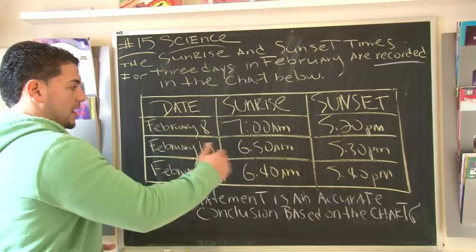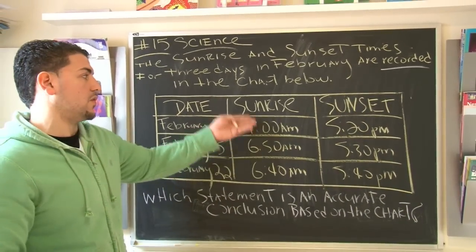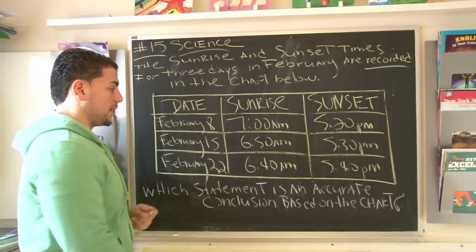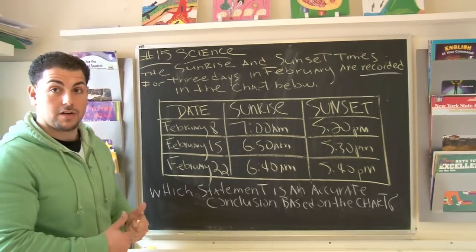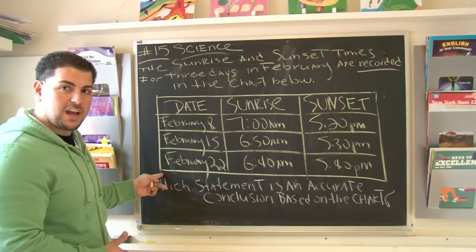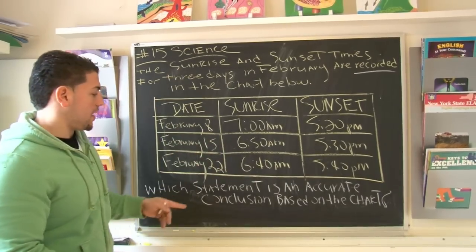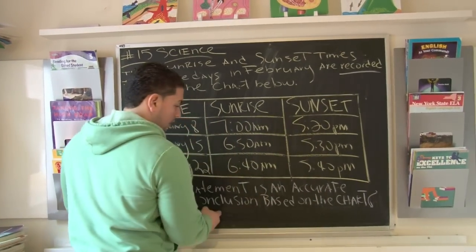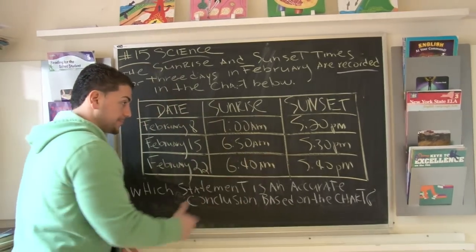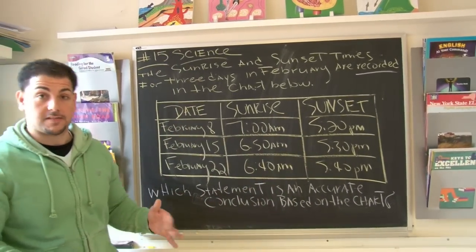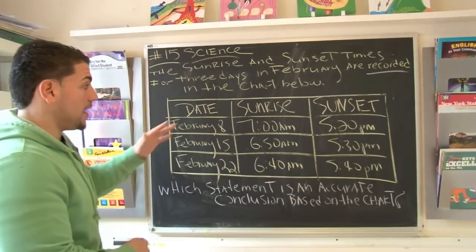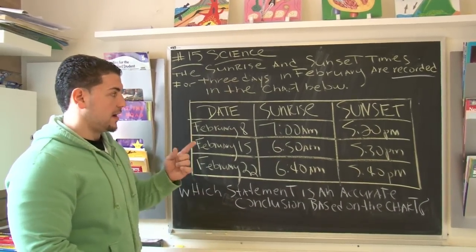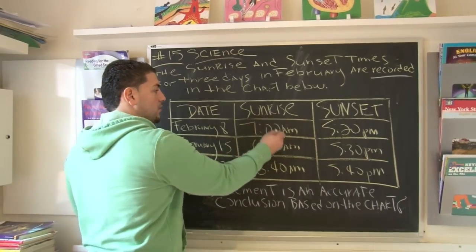Basically what you're seeing is a pattern. On February 8th, the sun rose pretty late, and then suddenly February 15th, February 22nd, the sun is getting up a lot earlier. Now the question we're going to have to answer with this chart says: which statement is an accurate conclusion based on the chart? They're going to give us four choices, but when you have charts like this, you always want to look for the details. What do we see here? We see sunrise.